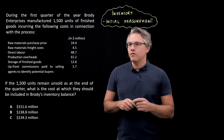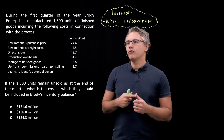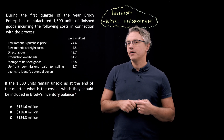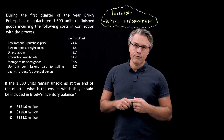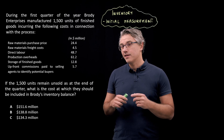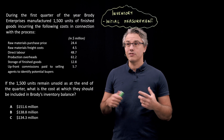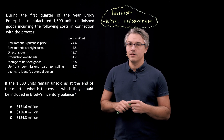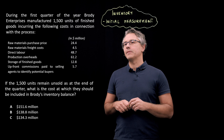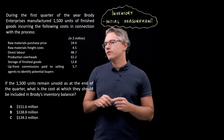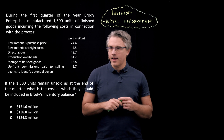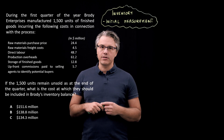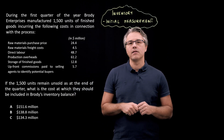We've got a list of costs, including raw materials purchase price, raw materials freight costs (that's the cost of transport), direct labor, production overheads (the indirect costs associated with production, such as electricity, water, etc.), storage of finished goods, and upfront commissions paid to selling agents to identify potential buyers. If the 1,500 units remain unsold at the end of the quarter, what is the cost at which they should be included in Brody's inventory balance? Three options, A, B, and C, follow.